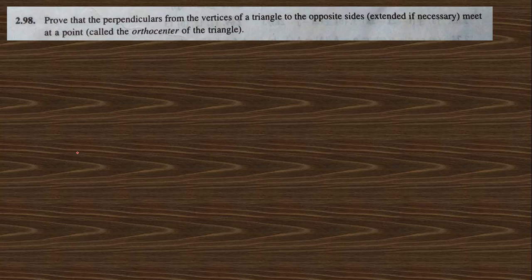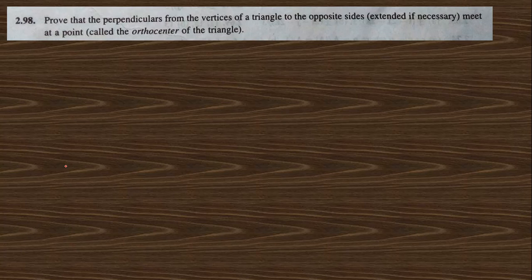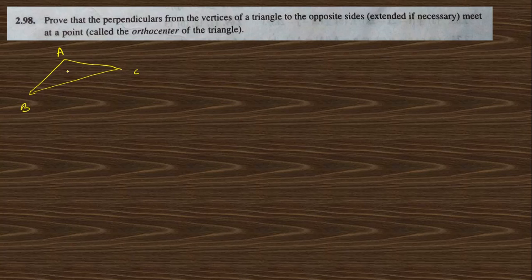First question 2.98: prove that the perpendiculars from the vertices of a triangle to the opposite sides meet at a point. So if I draw a triangle ABC, then AD is perpendicular to BC.